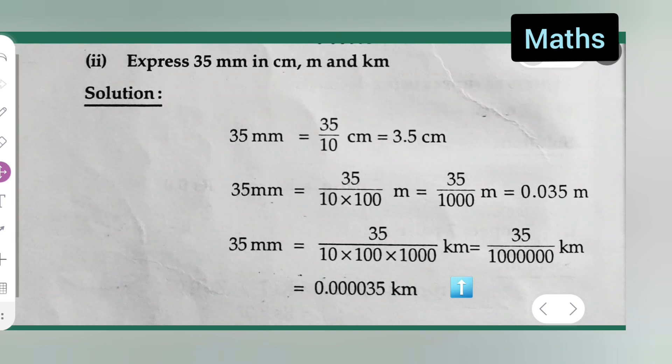That's 1 million in the denominator. I hope you all have understood how to express 35 millimeters in centimeters, meters, and kilometers. Thanks for watching.